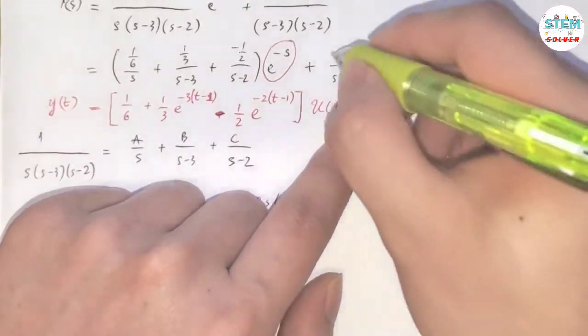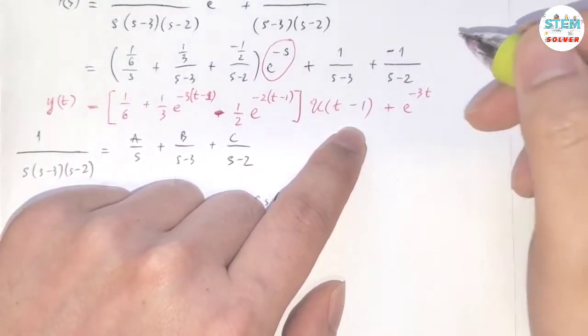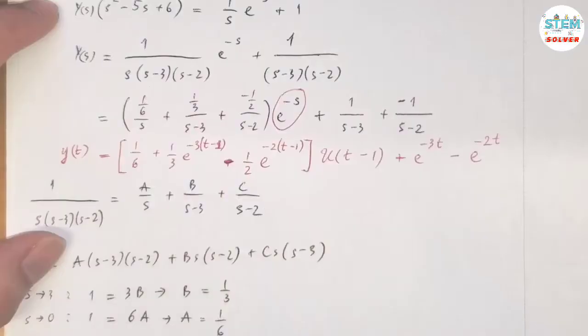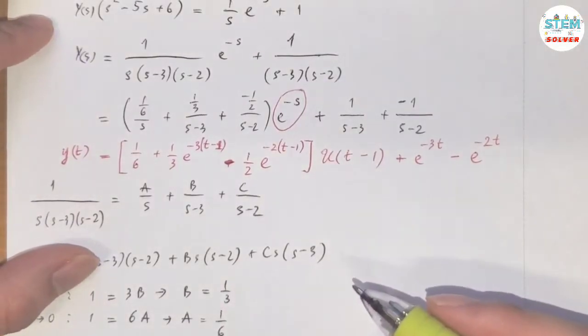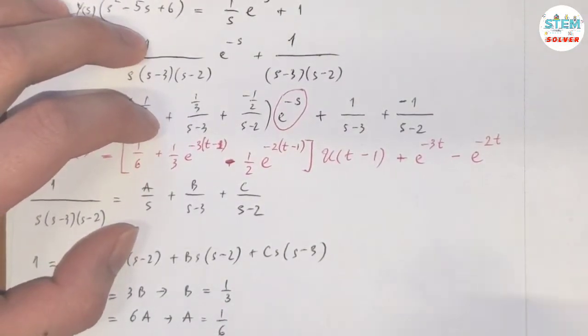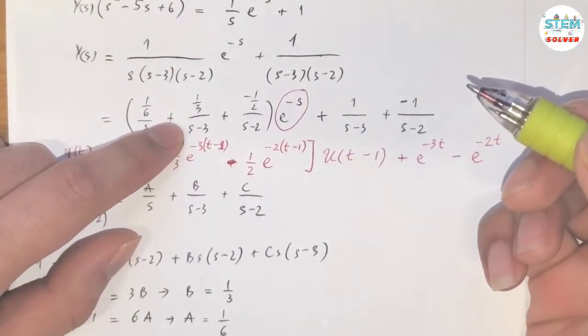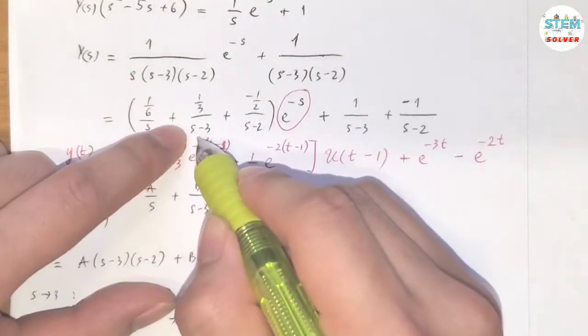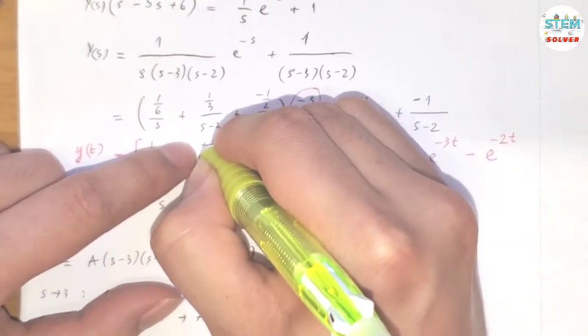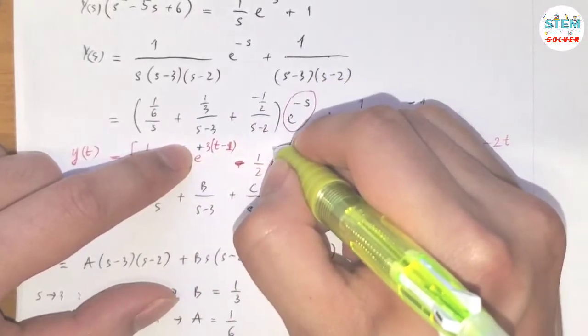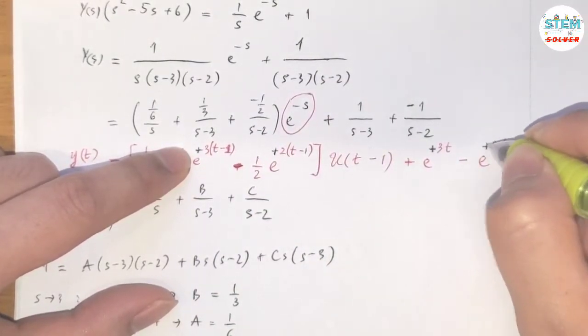Now for this one, L inverse of this is just e^(3t), and L inverse of this is e^(2t). Oh, sorry, sorry, just realized again I'm making a mistake, but it's easily fixed. When we took the L inverse, for this one, L inverse of this is e to the negative of negative 3, which is positive 3. Same for this one positive 2. But they are just positive.